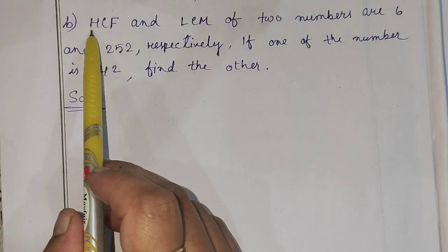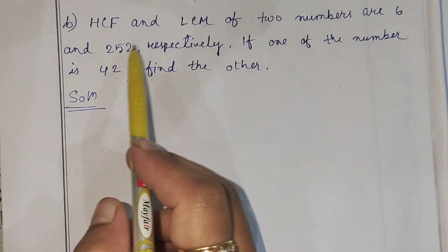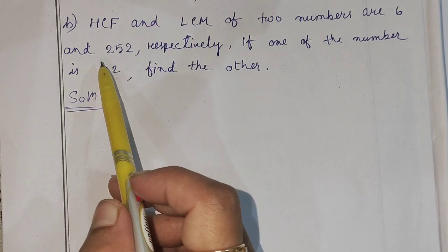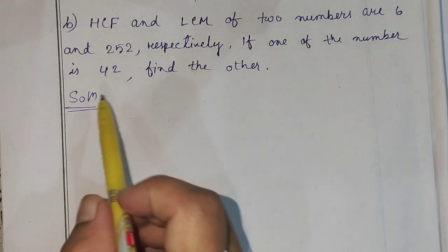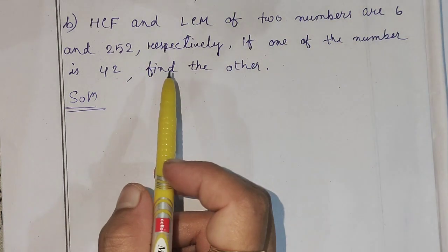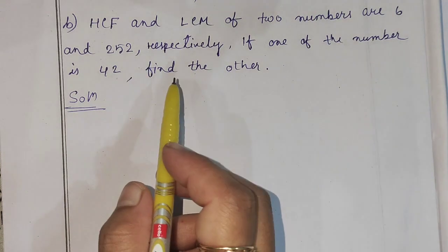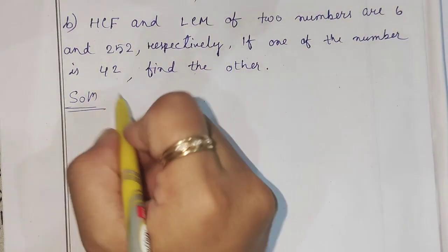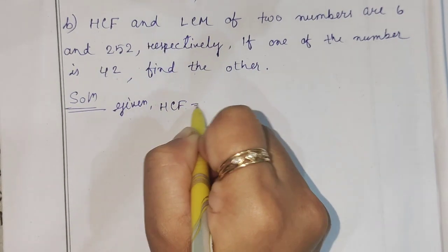Next, question number B. The HCF and LCM of two numbers are 6 and 252 respectively. If one of the numbers is 42, find the other. So this is the formula: product of two numbers is equal to LCM into HCF. HCF is 6.